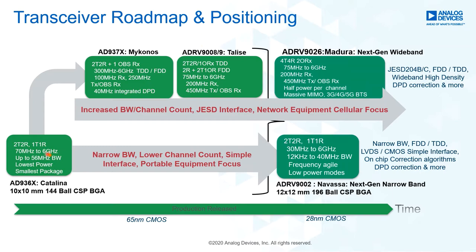Looking at the transceiver roadmap, the first device — the AD9361 — was released about 10 years ago, starting ADI on a journey to become a recognized leader in highly integrated transceivers for software-defined radio. The focus was on the network equipment and cellular market, driving channel count up to 4x4 and increasing bandwidths. The AD936x family starts at 56 MHz bandwidth and is now up to 200 MHz receive and 450 MHz transmit.